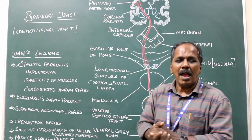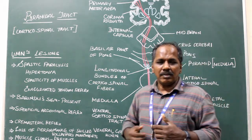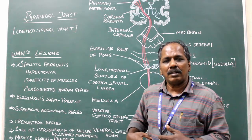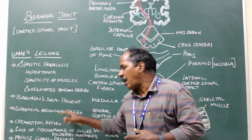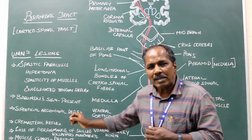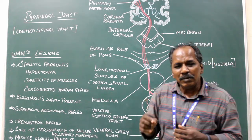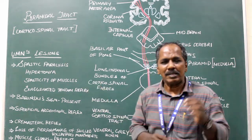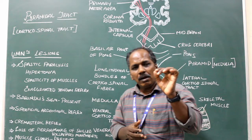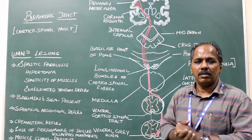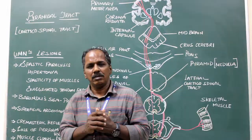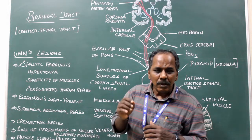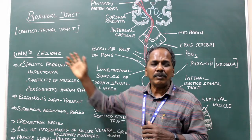Superficial abdominal reflex is absent in upper motor neuron lesions — when the skin over the anterior abdominal wall is scratched, the abdominal muscles normally contract, but this is absent in UMN lesions. Cremasteric reflex is also absent. Loss of fine skilled movements is also seen. Muscle clonus — uncontrolled rhythmic movement — is present in upper motor neuron lesions.